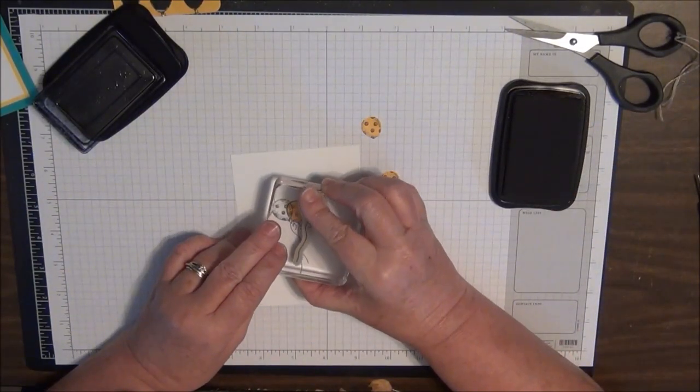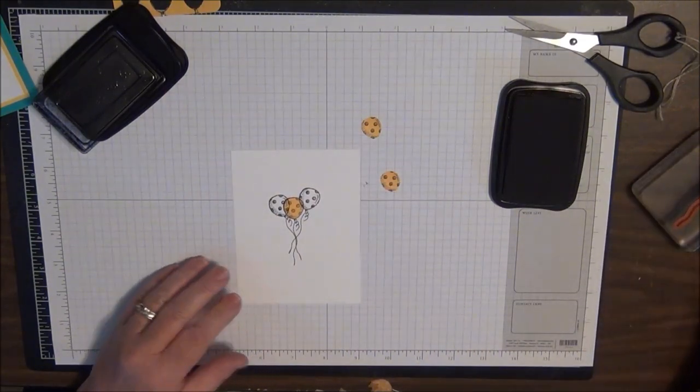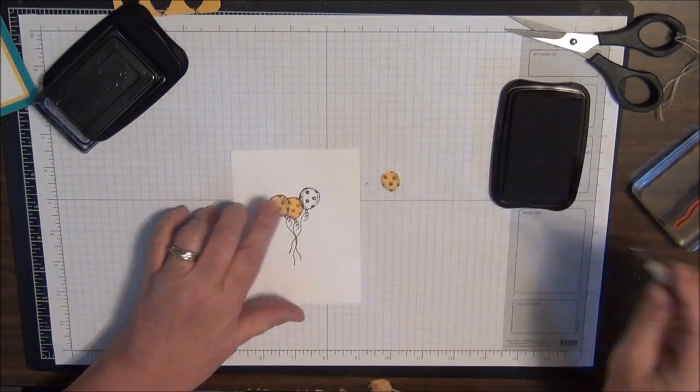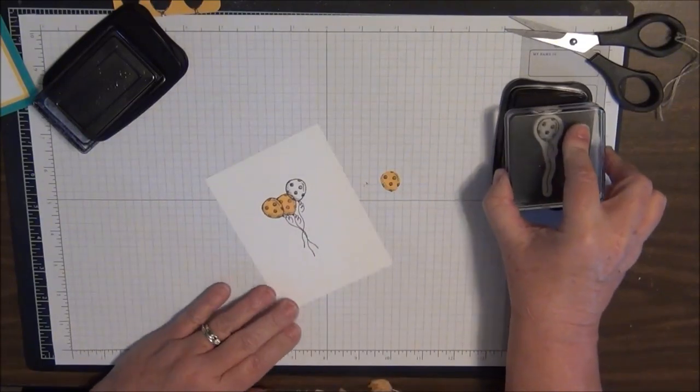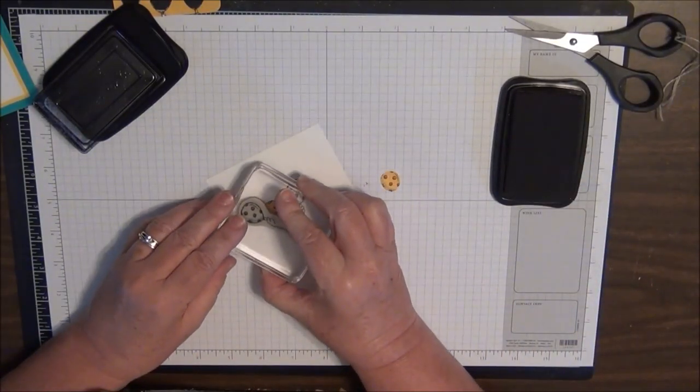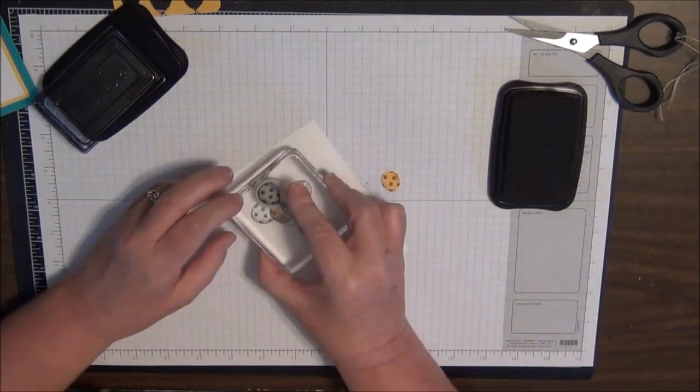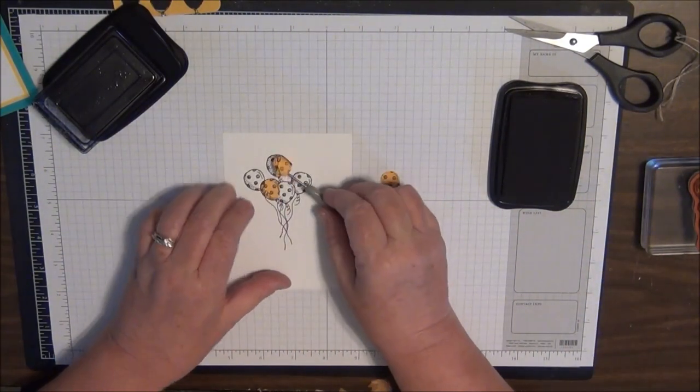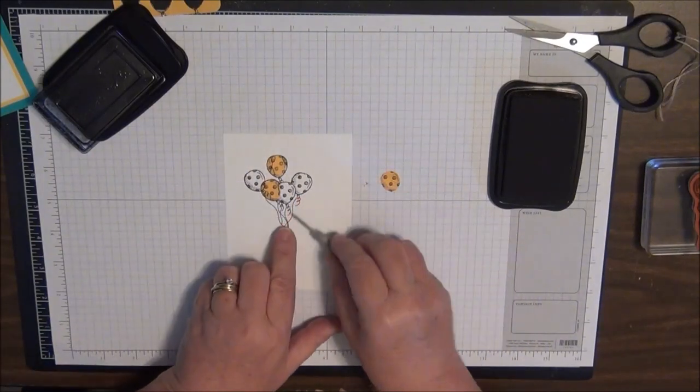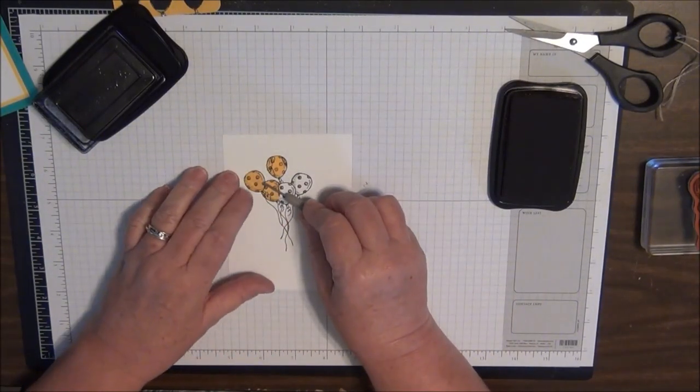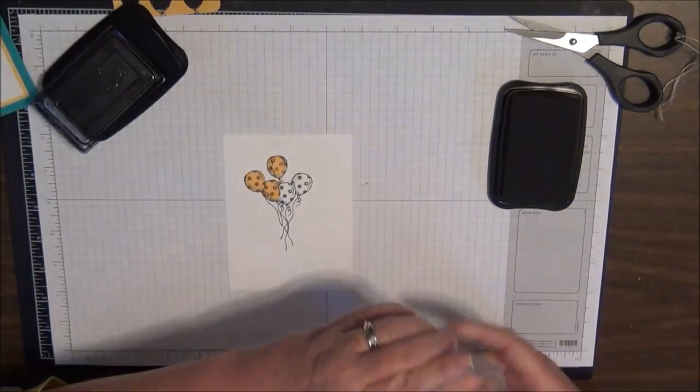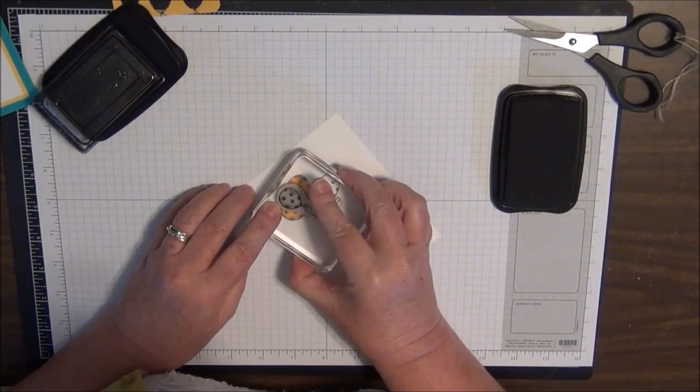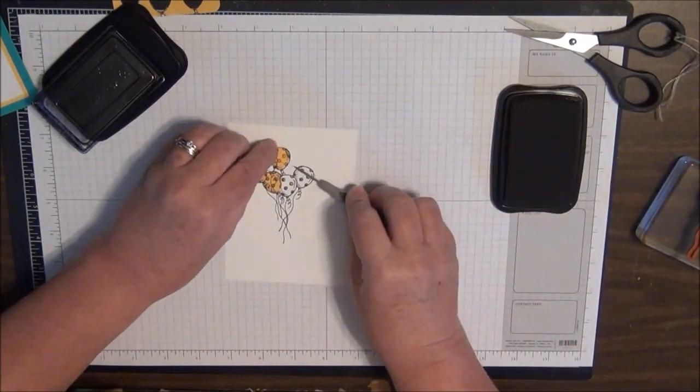Now I want some more balloons, so I'm going to go ahead and cover that up and let me stamp right here and right here. Now I really don't need this one down there, so let me cover that one up. Did you see how right there it looks? It's so cool when you take the mask off.